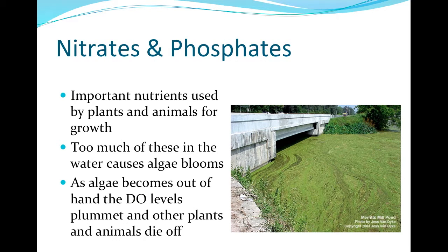Nitrates are fertilizers used by plants for growth. Typically nitrates are below 1 mg per liter, but can reach levels as high as 30 mg per liter. Excess nitrates are potentially harmful to humans and may lead to fish kills. Nitrate levels usually peak in early spring due to snowmelt and runoff, and can come from wastewater treatment facilities, leaky septic systems, or agricultural fields.